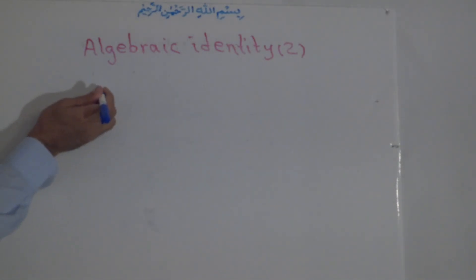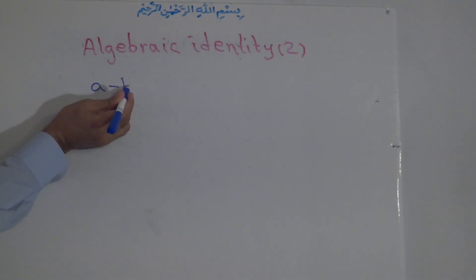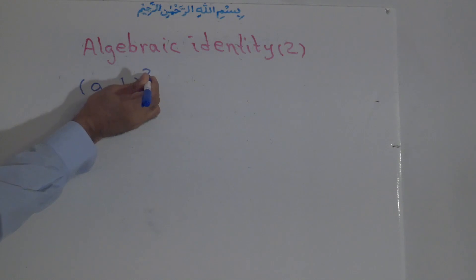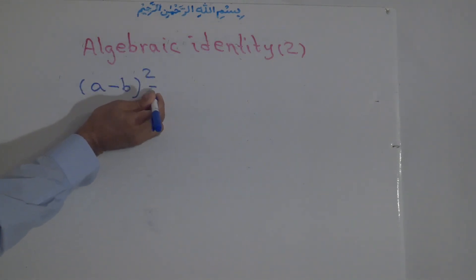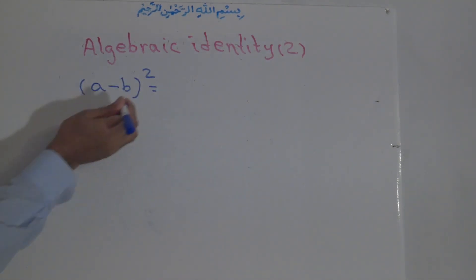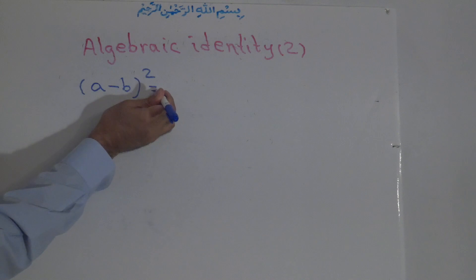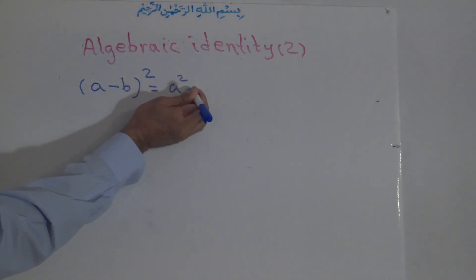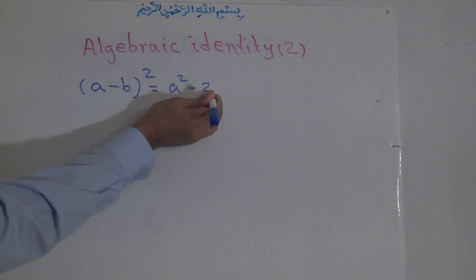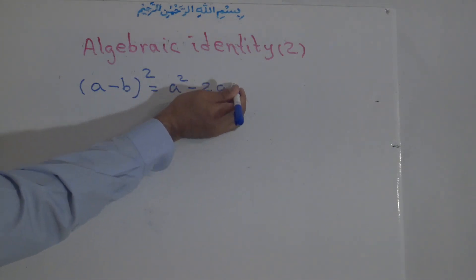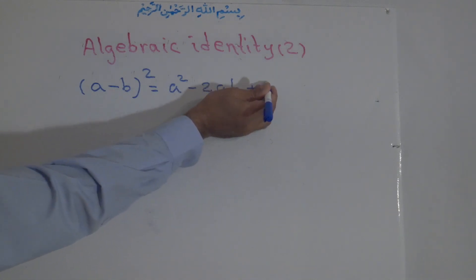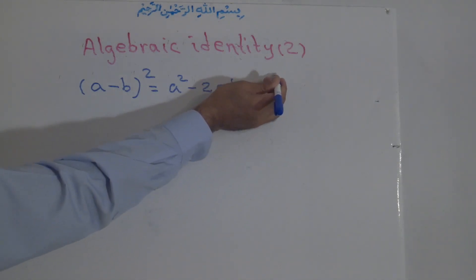The figure is like this: a minus b to the power of two is equal to a squared, or a to the power of two, minus two ab, plus b to the power of two.